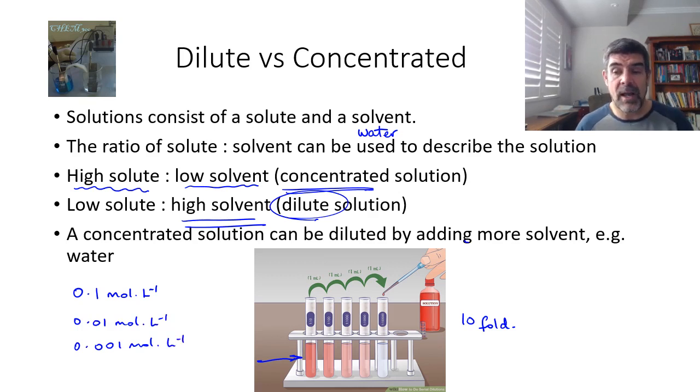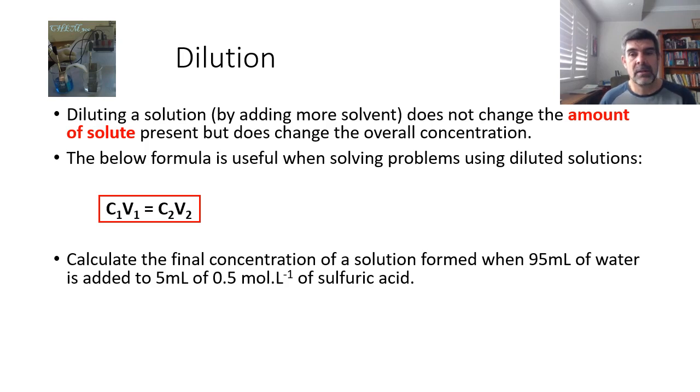Now if we do it in an ordered way like this, we can have a good idea of exactly what the concentration of each new solution is. But what if we don't do it like this? Is there another way? Of course there is. We don't have to do 1 in 10 fold dilutions each time.